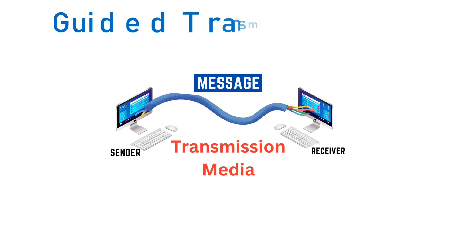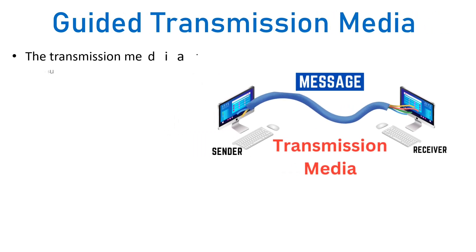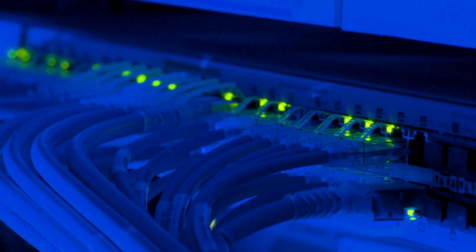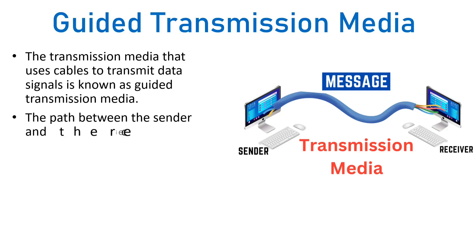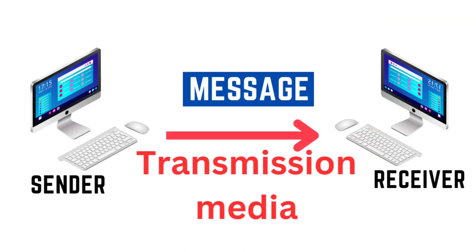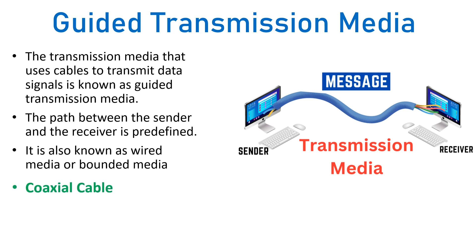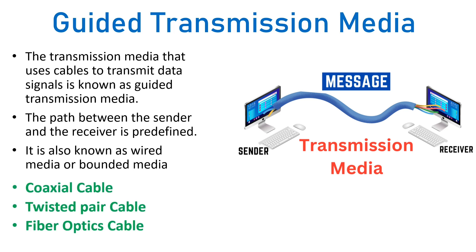Guided transmission media uses cables to transmit the data signal over the network. The path between the sender and receiver is predefined because they are connected with cables or fixed physical media, so the path is already defined. It is also known as wired or bounded media. Some types of guided transmission media are the coaxial cable, twisted pair cable, and fiber optics cable.